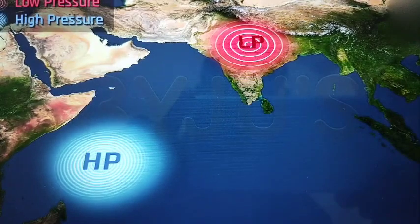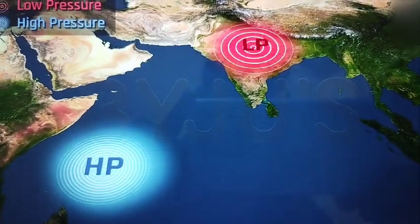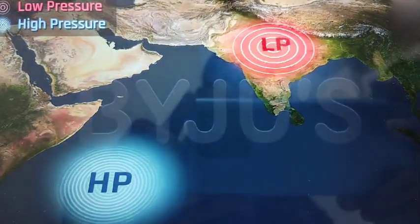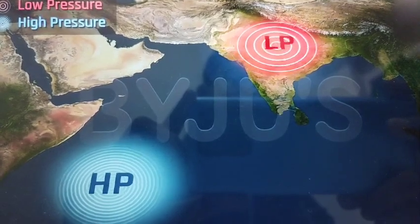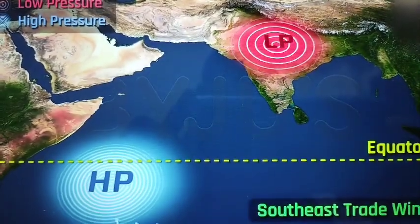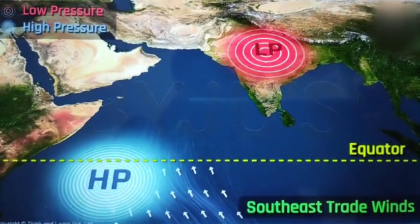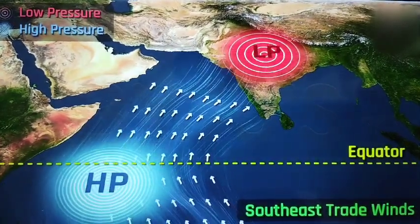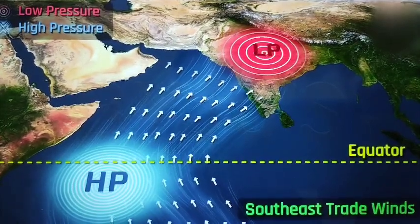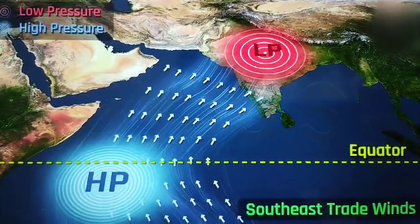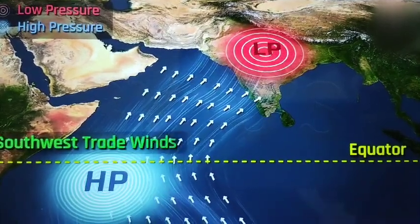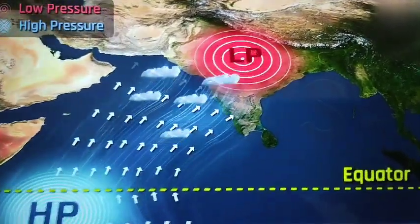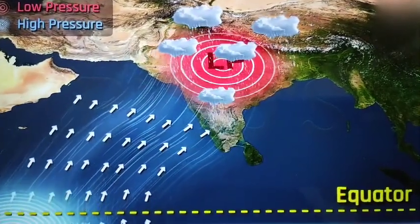Now, a pressure difference has been created, so the winds are ready to move. This low pressure zone of the monsoon trough over the Ganga plains attracts the southeast trade winds from the southern hemisphere. These winds cross the equator and turn towards their right because of the Coriolis force. They then start moving towards the Indian subcontinent, entering from the south-west direction. Along their path, they pick up moisture from the Indian Ocean and cause rainfall in the Indian subcontinent.